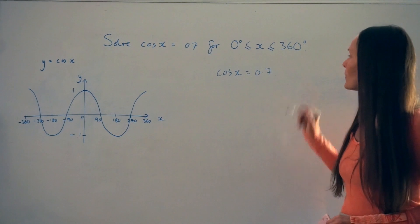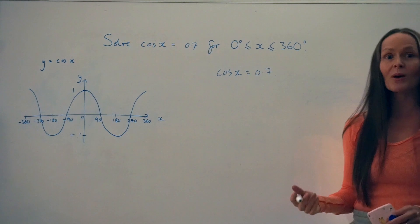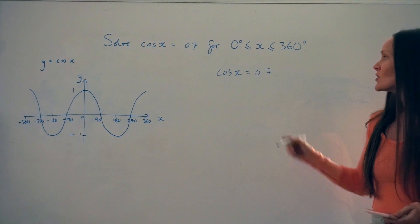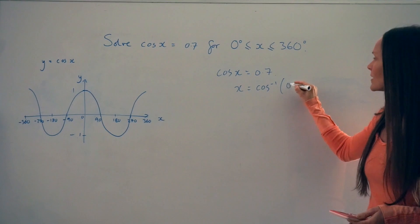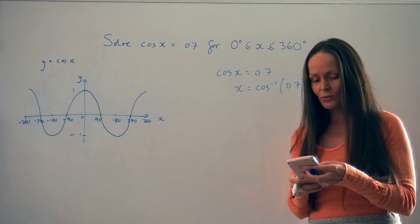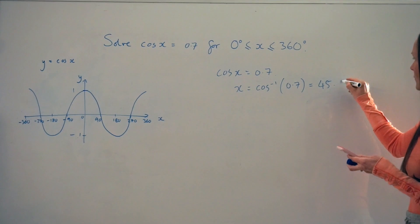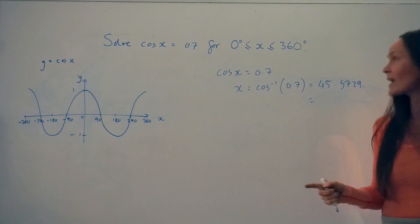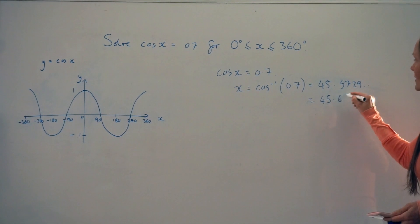You probably know how to solve this type of equation already — when you did the topic SOHCAHTOA, finding angles in right-angled triangles, you solved equations like this. To work out the value of x, you would type into your calculator cos minus 1 of 0.7. When I put that in the calculator, I get 45.5729 and so on. Rounded to one decimal place, that's 45.6 degrees.